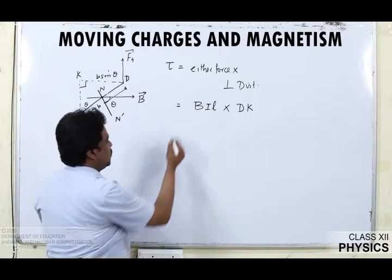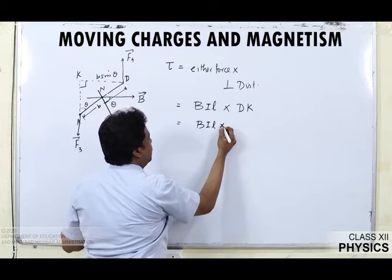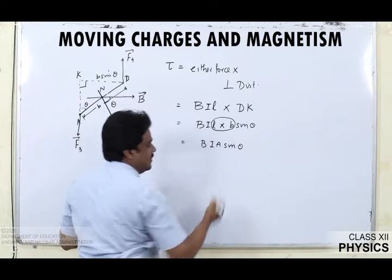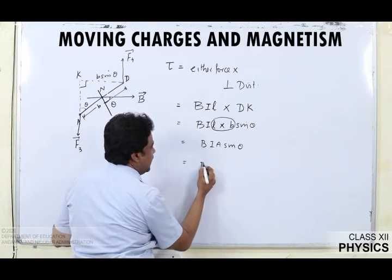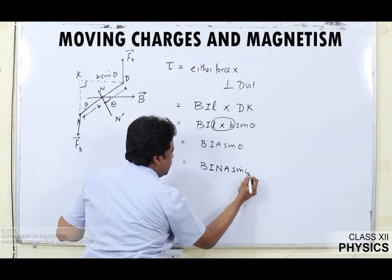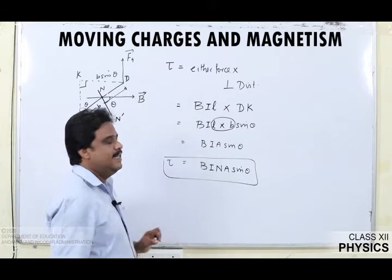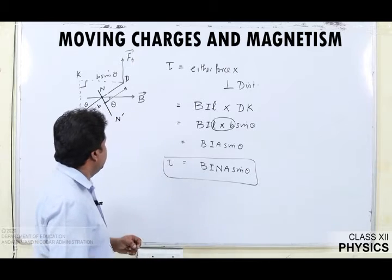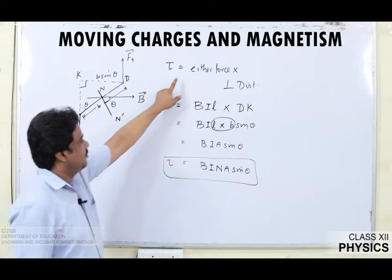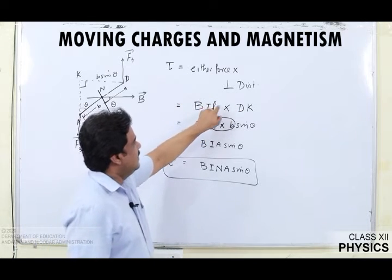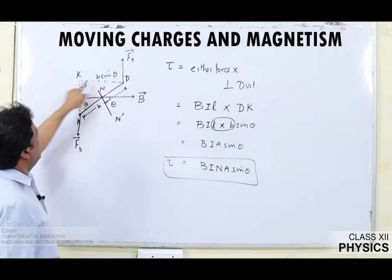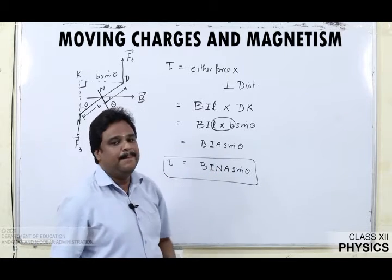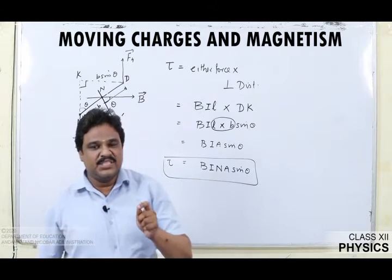So the torque is: force BIL times perpendicular distance B sin theta. Length times breadth equals area, so I can write it as BIAN sin theta. If the loop has N number of turns, tau equals BINA sin theta. This is the torque experienced by the rectangular loop placed in a magnetic field.